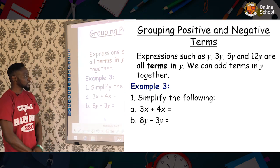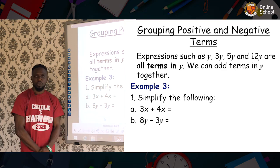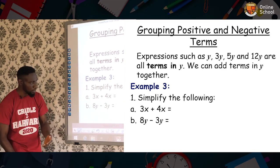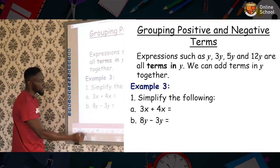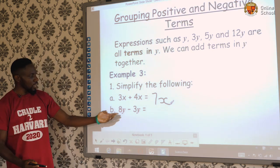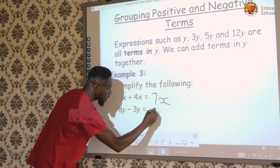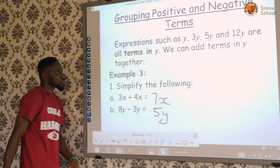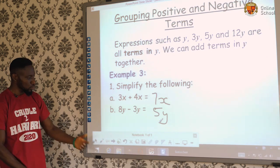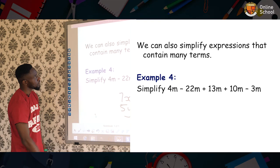Let's look for example. The example where we said simplify the following: 3x + 4x. It's just to add them up. Why? Because they are like terms. So we say 3x + 4x is going to give us 7x. Also, look at the next one. 8y - 3y will give us 5y. So we said we can group positive and negative terms together. Now, let's go to the next page.